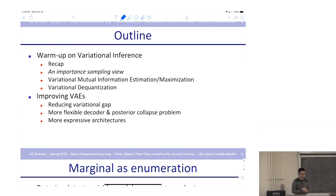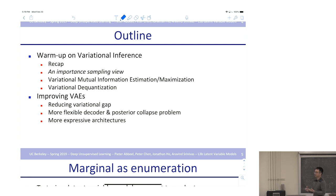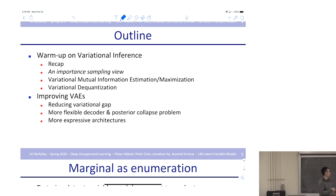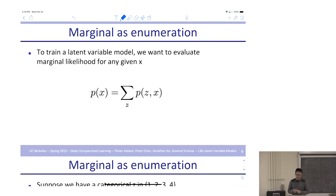That's a recap of what we did last time: we want to get to the true posterior, but we can't access it in a tractable way, so we come up with a variational approximation. But it's still somewhat mysterious what variational inference is actually doing. What's next is we walk through a simple example from an importance sampling perspective to understand what it gives you.